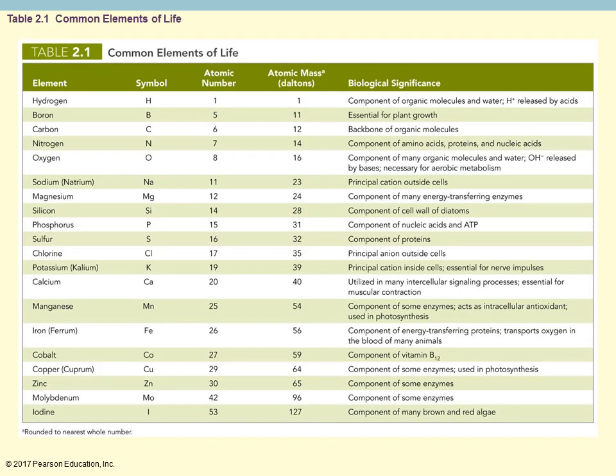This table shows some of the more common elements seen in biology associated with living things. The most common elements in most living things are four major ones: hydrogen, carbon, oxygen, and nitrogen. Some people remember this with the word CHON, where each letter stands for one of those elements. The chart shows the element, symbol, atomic number, atomic mass, and its significance relative to biology.